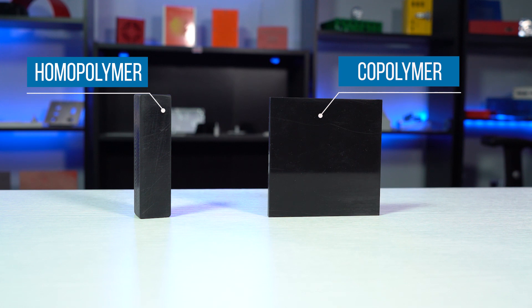Specifically, the homopolymer acetyl we stock is the brand name Delrin. Now, let's go through the differences between the two types.